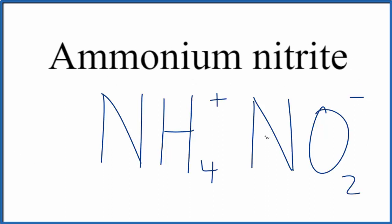Ammonium nitrite, even though these are all nonmetals, is an ionic compound because we have these two polyatomic ions. Because of that, these charges need to add up to zero. One plus and one minus add up to zero.